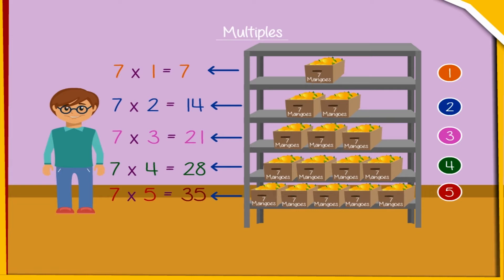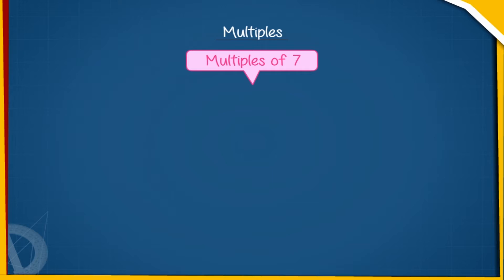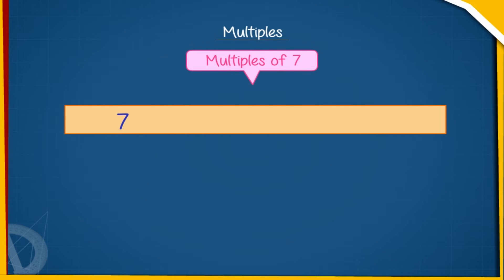The multiple of a non-zero number is the product of the number and a natural number. So the multiples of 7 are 7, 14, 21, 28, 35, 42, etc.